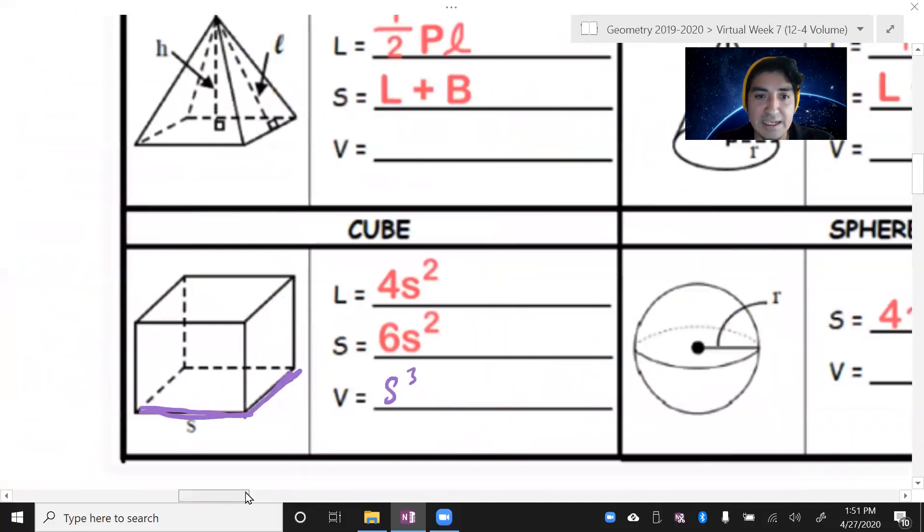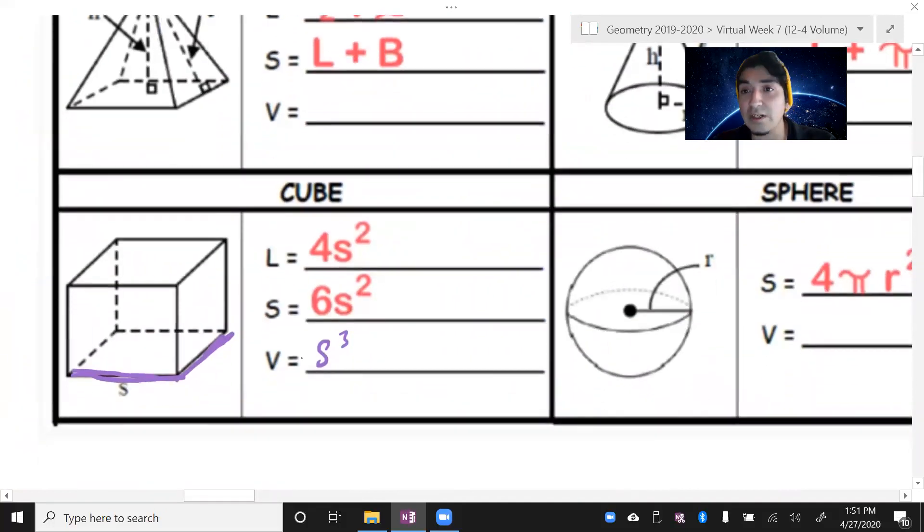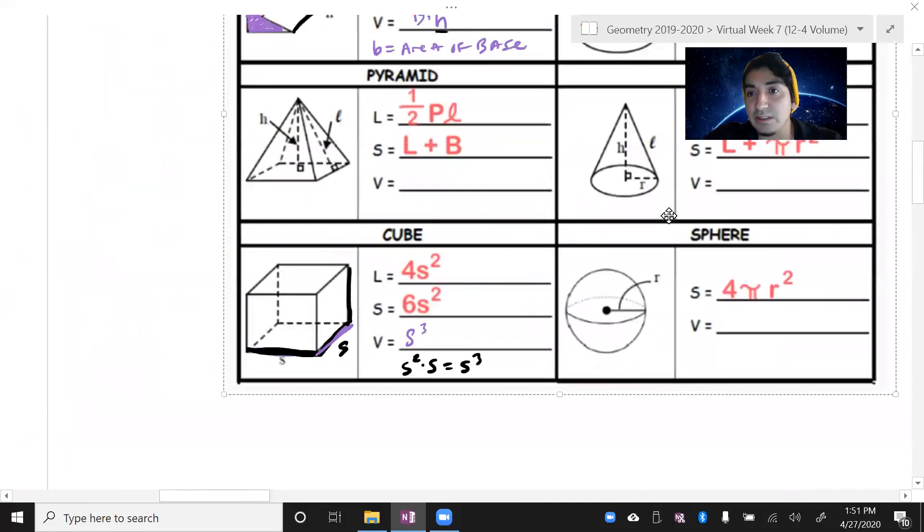Now for a cube, the volume is going to be s cubed. All we're doing here is we're multiplying s times s, and that's already s squared, and then times the height. Because then the whole entire cube starts filling up times s, and that'll be s cubed. Just be careful when you're working with cubes.